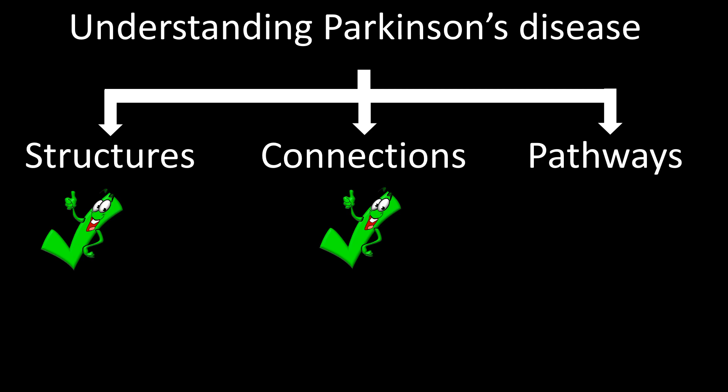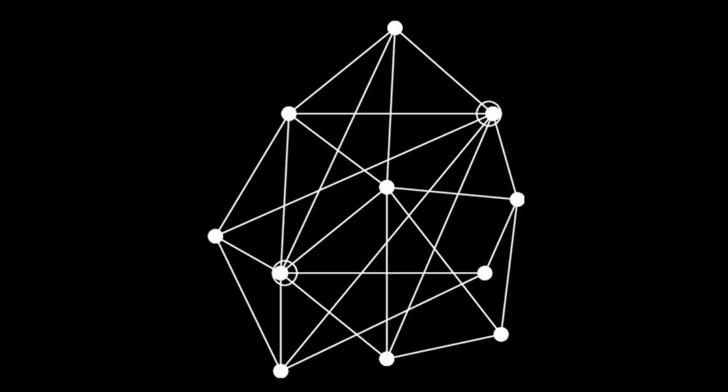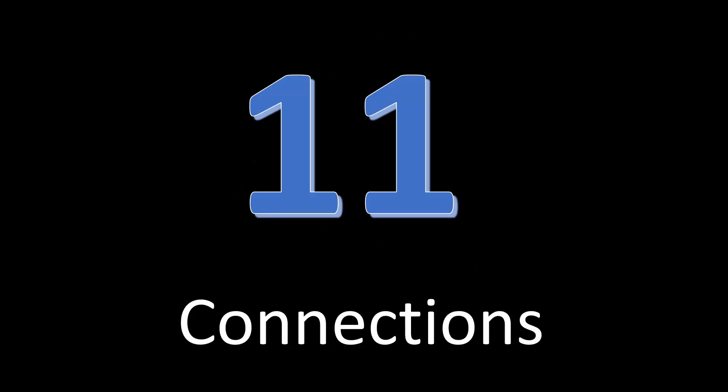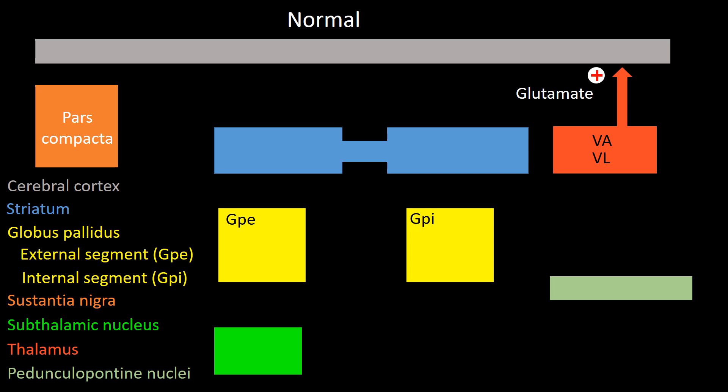There are many connections among the structures we have named. I will tell you about 11 connections important to our narrative. The first goes from the thalamus to the cortex — this is an excitatory connection; glutamate in the correct amount keeps movement smooth. The second goes from the internal segment of the globus pallidus to the ventrolateral and ventral anterior nuclei of the thalamus — this is an inhibitory connection.